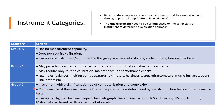Now Group C. Group C instruments have a significant degree of computerization and complexity. These are equipment connected with some kind of software and have a computerized system component. The conformance of these instruments to user requirements is determined by specific function tests and performance tests. Examples of Group C instruments include high performance liquid chromatography, gas chromatography, IR spectroscopy, UV spectrophotometer, and Malvern or laser-based particle size distribution instruments.